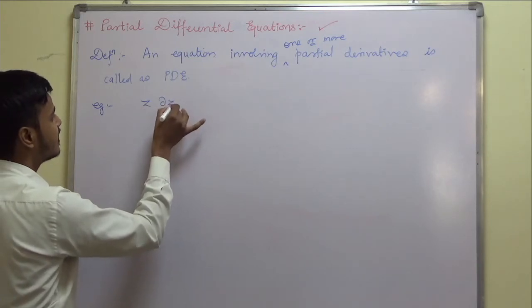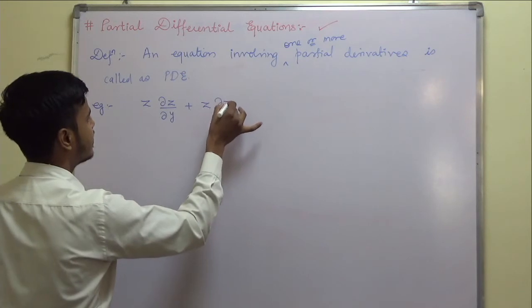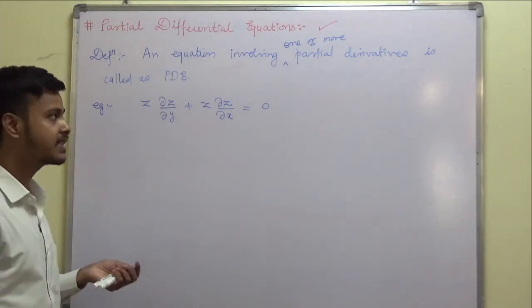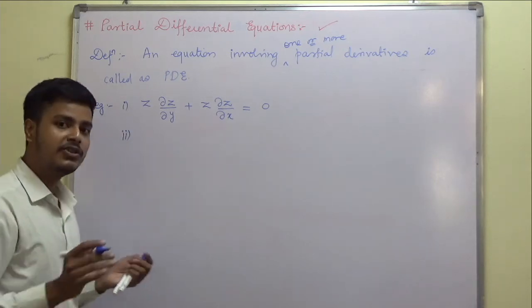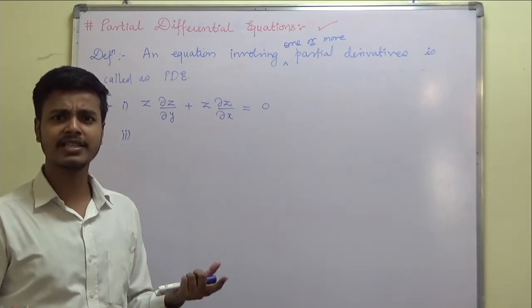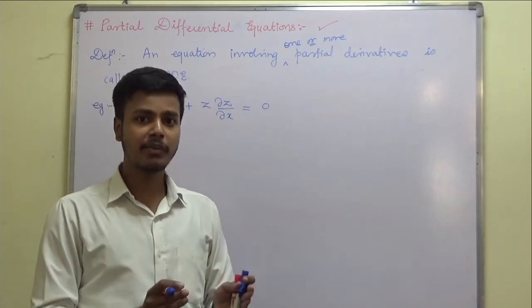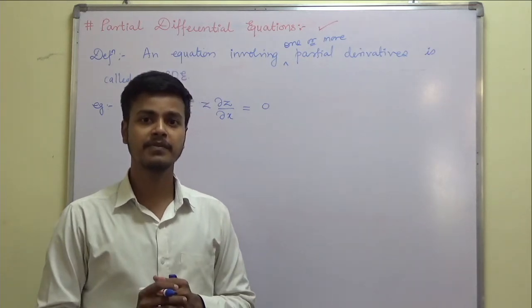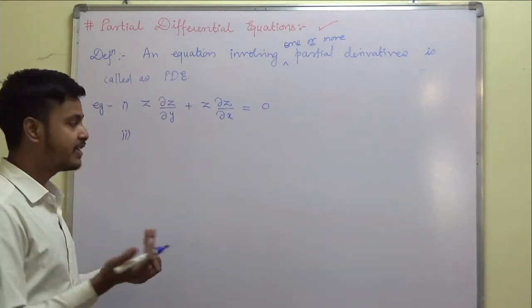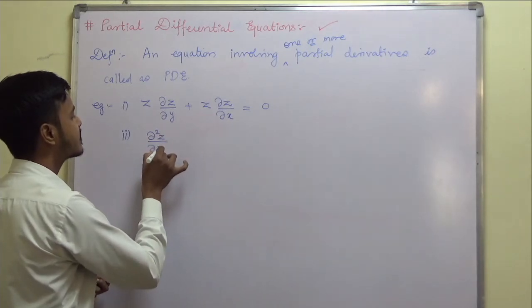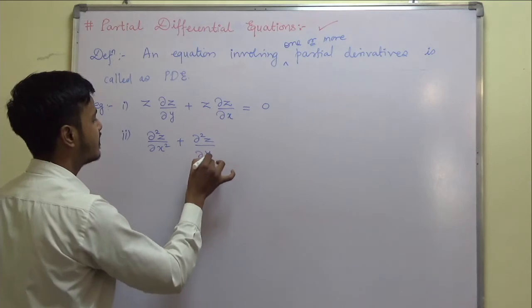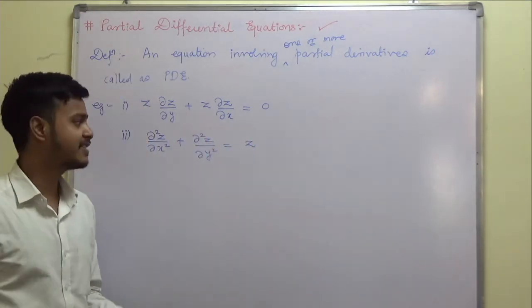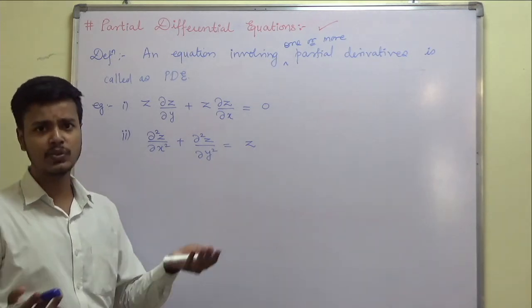Can you write some examples of PDE? One example is: z (del z by del y) plus z (del z by del x) equals 0. I want you to pause the video, write at least one example of a partial differential equation, then resume. Another example is: del squared z by del x squared plus del squared z by del y squared equals 0. You may also have terms with z on the right-hand side — it is not necessary to always equal zero.